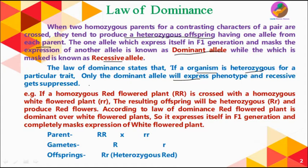This will be more clear from an example. If a homozygous red flower plant with genotype RR is crossed with a homozygous white flower plant with genotype rr, the resulting offspring will be heterozygous (Rr) and will produce red flowers. Here you can see we have selected two parents: one is RR and the other is rr.